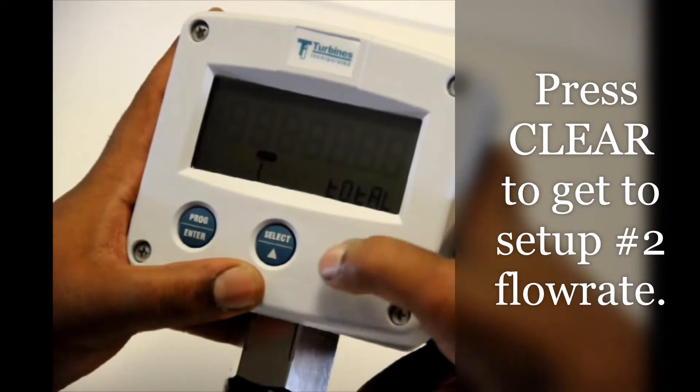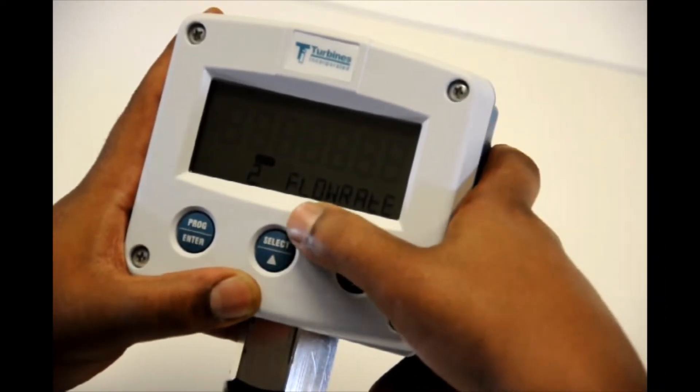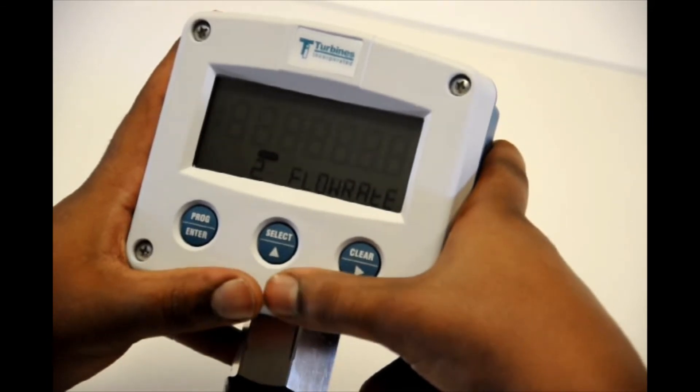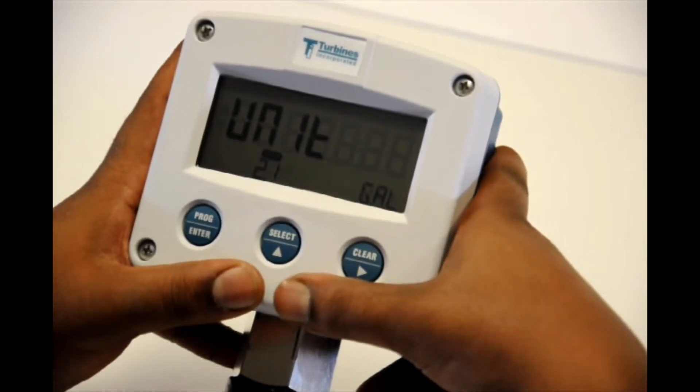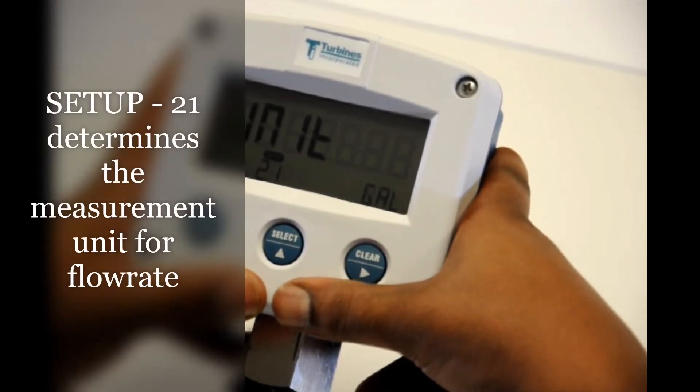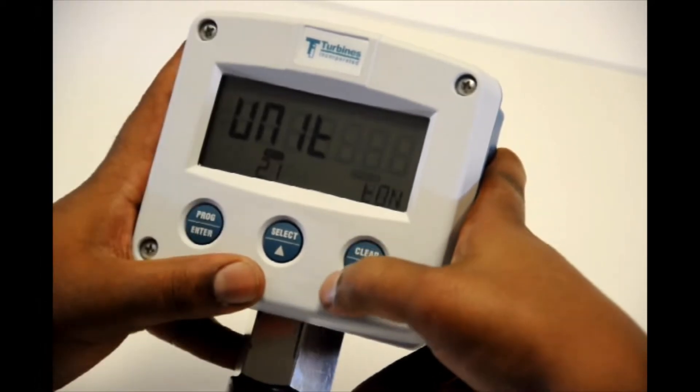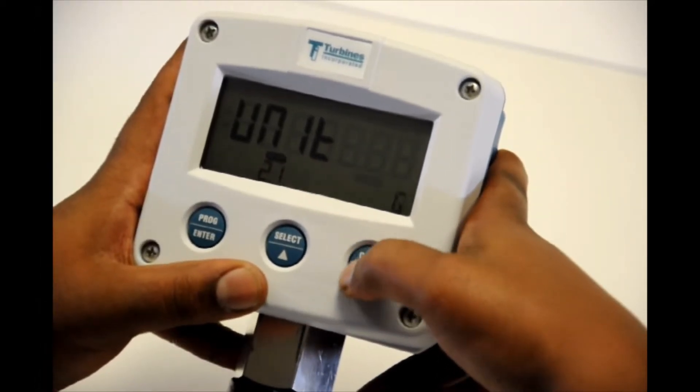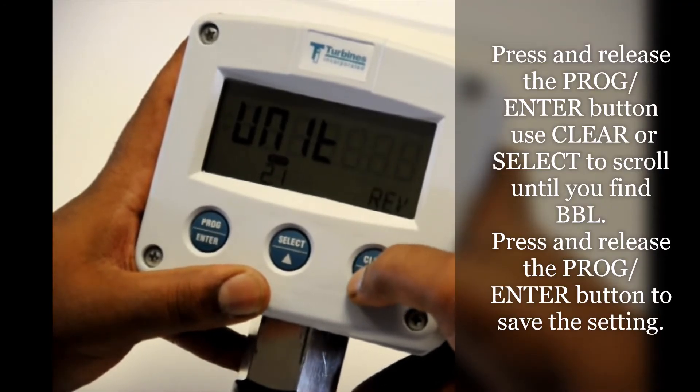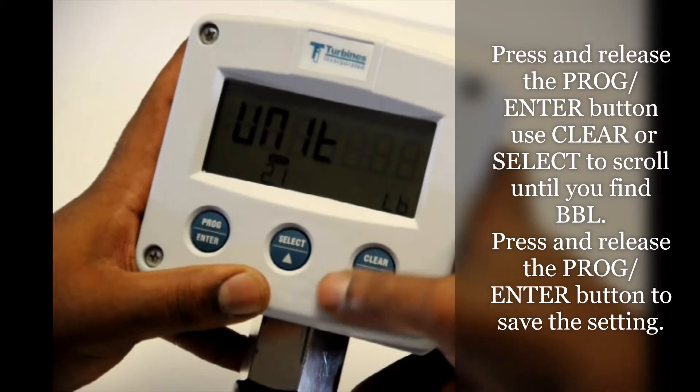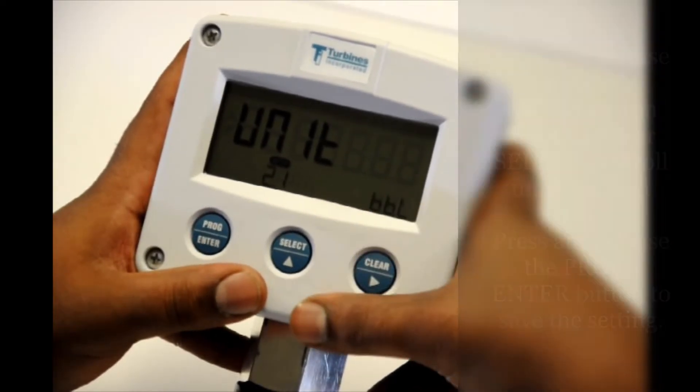Now from here we're going to hit clear. Now the same thing we did for total we're going to do for our flow rate. So to move up to our first tier in flow rate hit select. Our first unit descriptor we're going to change that to barrels. So to do that hit program enter. Hit clear till I get to BBL. The unit descriptor we'll be using today. Once found we're going to hit program enter. Program flashing went away so it's locked in.